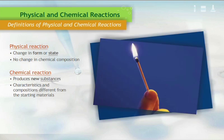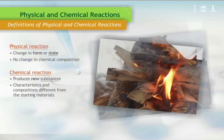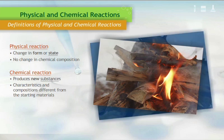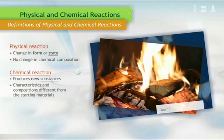First, something—such as a match, focused light, friction, or lightning—heats the wood to a very high temperature. When the wood reaches 300 degrees Fahrenheit, the heat decomposes some of the material that makes up the wood. Some of the decomposed material is released as smoke and some as char.